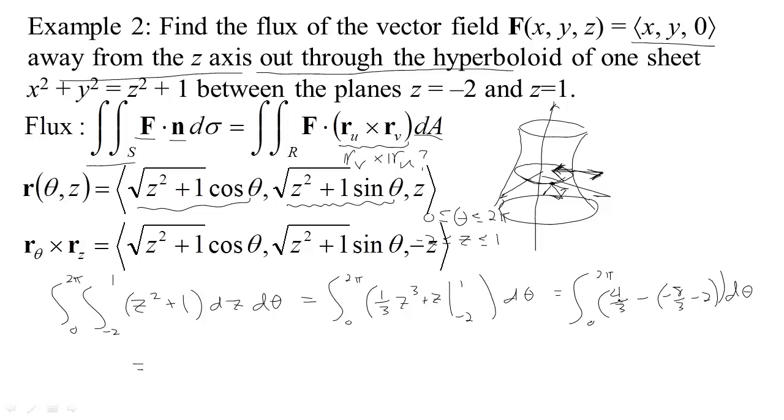So we've got 4 thirds minus, minus 8 thirds, that would be 4 thirds plus 8 thirds, that's 12 thirds, that's 4. And then minus, minus 2 is plus 2. So we have 4 plus 2, that's 6. So the integral from 0 to 2 pi of 6 d theta which is going to be 6 times 2 pi. Since the integral of 1 d theta is just theta and theta between 2 pi and 0 is 2 pi. So we get 12 pi as the flux out of that surface.